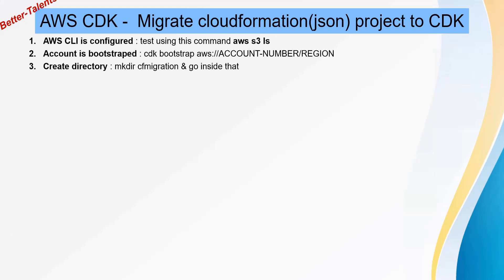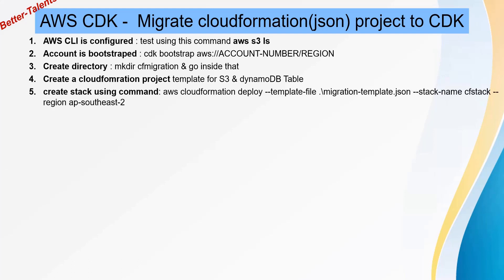So that's the directory we're going to create, and just move to that directory, and then create a CloudFormation project in step 4. In the CloudFormation project what we're going to do is we're going to make an S3 bucket and a DynamoDB table, and then we're going to deploy this CloudFormation project using the AWS CloudFormation deploy CLI command.